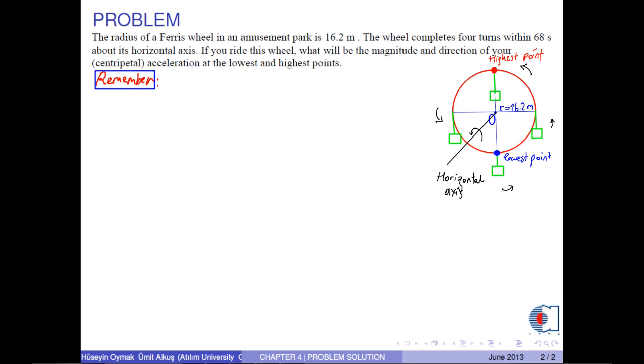Before solving the problem, you should remember that in uniform circular motion, the velocity of the object is always perpendicular to the radius of the circle and its speed is always constant.